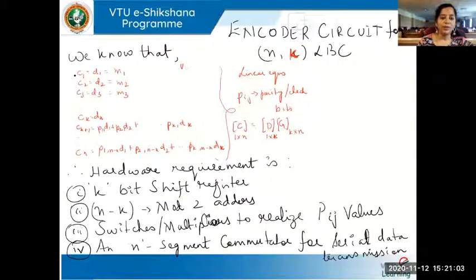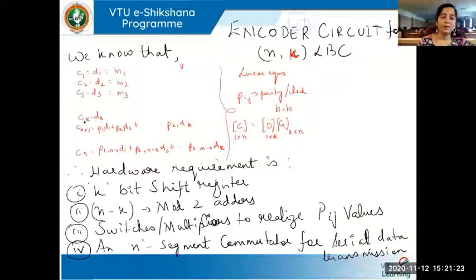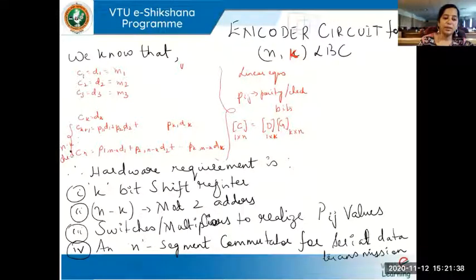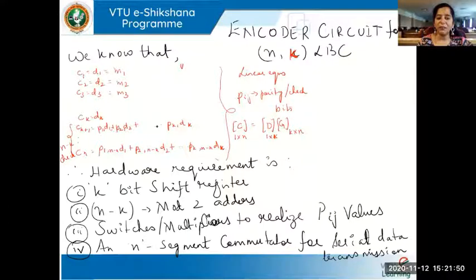We know that the linear equations defining the block code can be written as c1 = d1 (or m1, if you call the data as message — naming conventions are free). The first k bits of the code vector will be the same as the data vector, so till ck = dk we get data equal to code. The next n-k bits are the check bits or parity bits, and they depend on the data bits in a linear manner. We use linear equations showing this dependence, and we have to realize this using hardware — that's the encoder circuit.